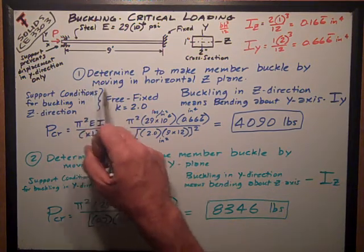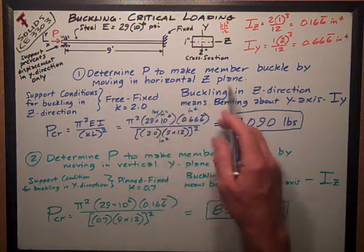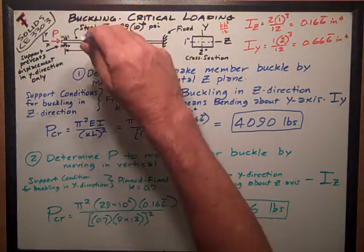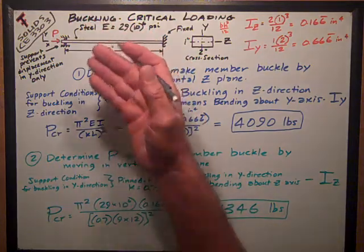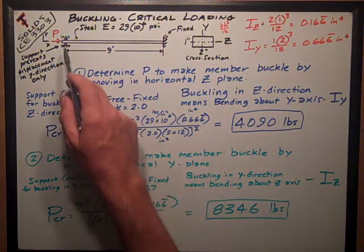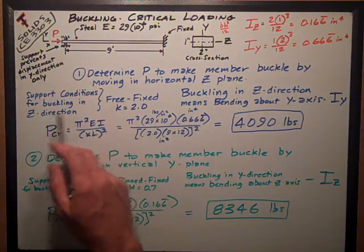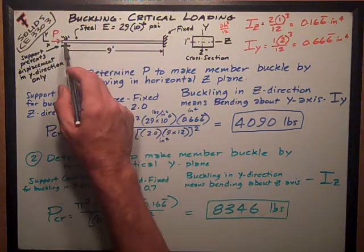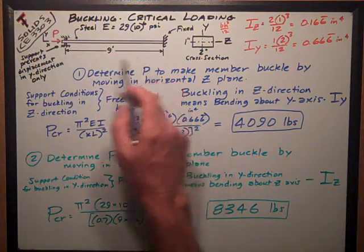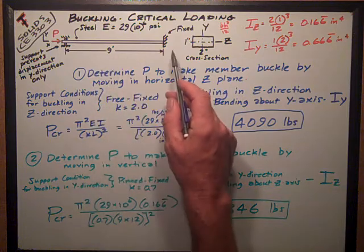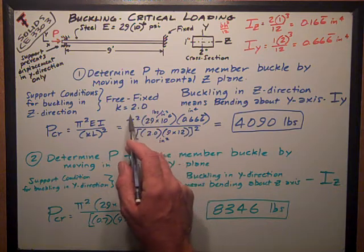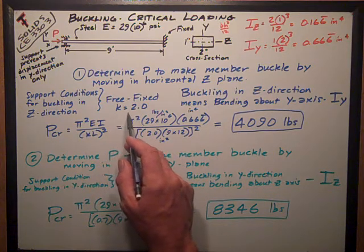First part of the problem was determine the force, axial force P, to make the member buckle by moving in the horizontal Z plane. That means it's going to buckle in the Z plane, which is the one coming out of the board, so it's going to buckle in or out of the board. So the support conditions, as we explained up here, for buckling in the Z direction, it's not restrained at this end. So that means it's free at this end to just move around, and it's fixed at this end. The free-fixed support condition, the effective length factor K is 2.0.